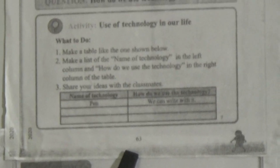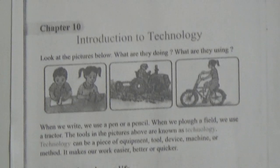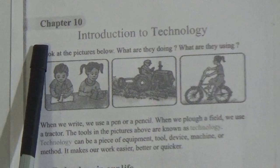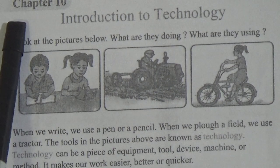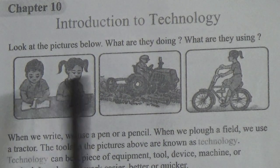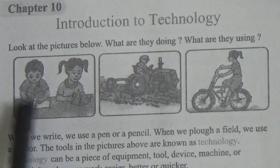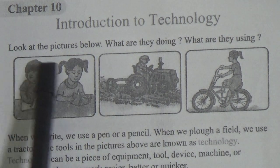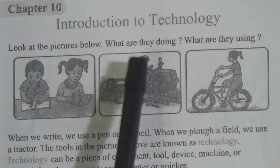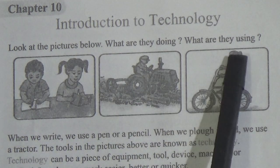Here is page number 63 of your science book and this is chapter number 10. The name of this chapter is Introduction to Technology. Here is written: Look at the picture below. What are they doing? What are they using?